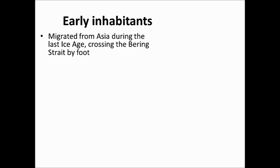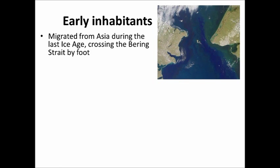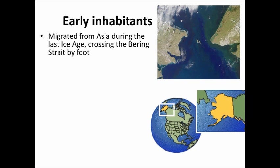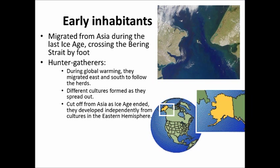Who were the early inhabitants of the Americas? We think they were hunter-gatherers who came across during the last ice age at an area we call the Bering Strait, following animal herds on foot. The water level dropped because of the cold weather and also froze over, so they followed herds across this land bridge — up where Alaska and Asia meet. When it was frozen, it was a total land bridge. Once it warms, they're sort of trapped over here, and different cultures formed as they spread out across the Americas, cut off from Asia when the ice age ended. They developed independently from the Eastern Hemisphere.